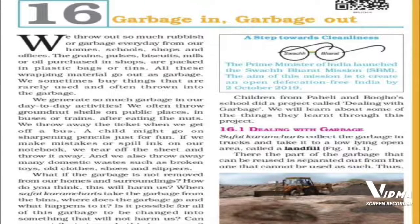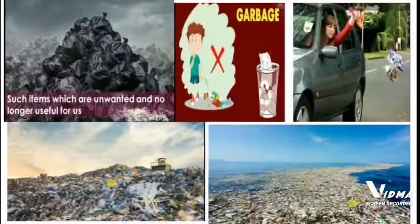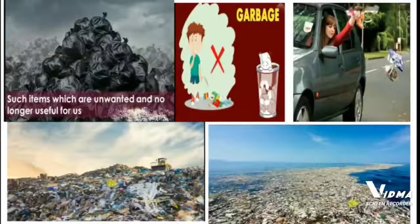So what is included in garbage? What is waste? Any material or item which is unwanted or no longer useful for us is called waste. Like wrappers, plastics, polythenes, peels of vegetables, fruits, etc. All these are waste and are thrown out as garbage.